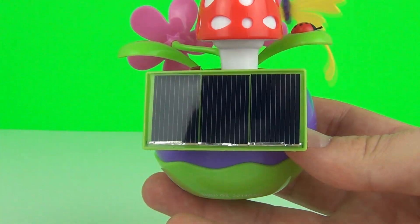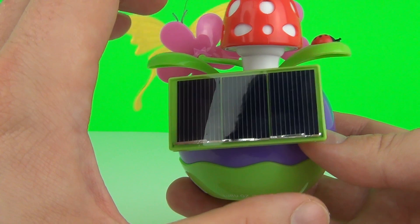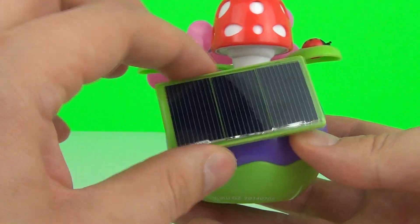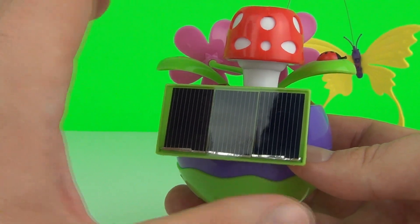You can angle it so if you have it outside and you need direct sunlight on this for the solar panel to work, you can angle that to get your best position. So guys, do remember you will need direct sunlight for the solar panel function of this toy to work. If you don't have any sunlight, you can use the battery mode.